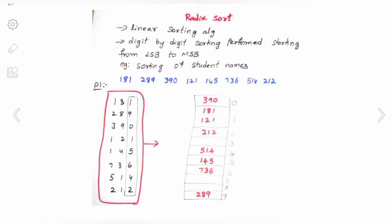Now for the Radix Sort example, we consider the array: 181, 289, 390, 121, 145, 736, 514, and 212 — all numbers have equal digits. We scan each number and separate the least significant digit. For 181, the least significant digit is 1, so 181 is inserted into pocket index 1. Similarly, we scan each item and insert it into the appropriate pocket based on its least significant digit.